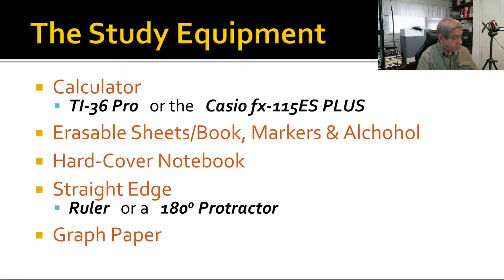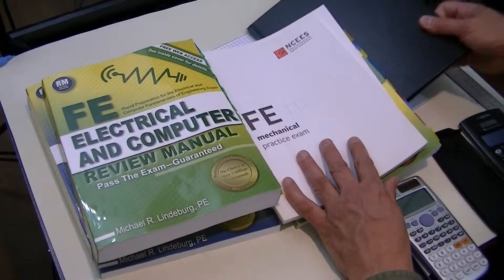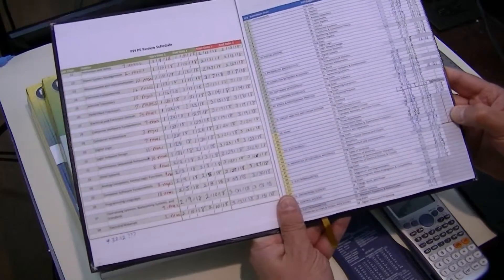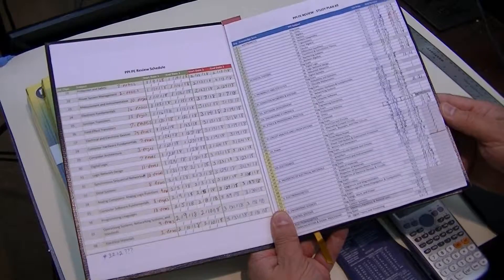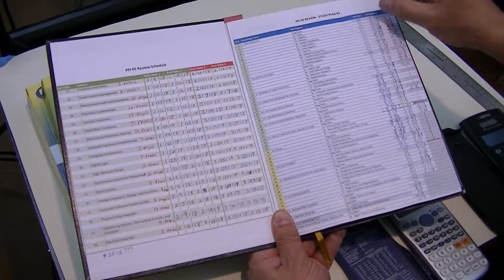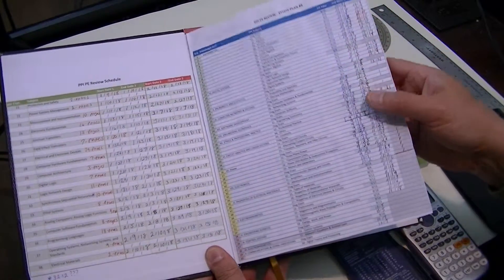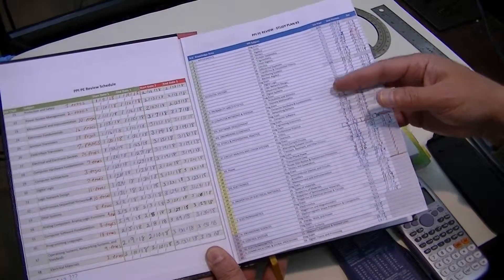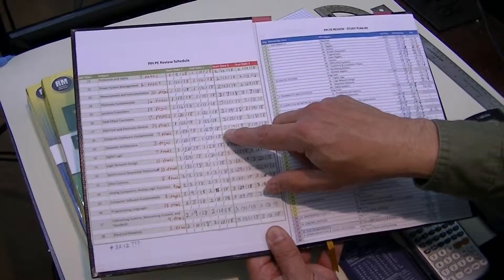Now other things you need to have—some of which I spoke about in a previous lesson—include the erasable sheets or book, markers that are erasable, and the alcohol you need to erase them. I also recommend that you have a hard copy notebook. I'll use this one I bought online—I'll put the link down below along with other material I have here. But this is actually my actual study plan that I used during the test. I put up here a copy of what you'll see in a few minutes: my actual study plan.